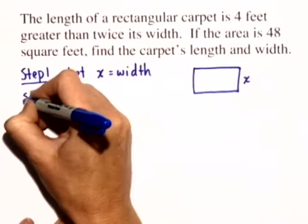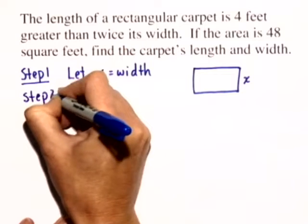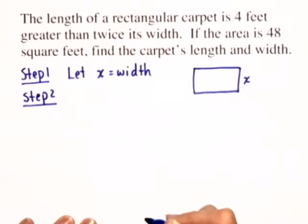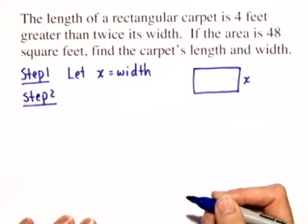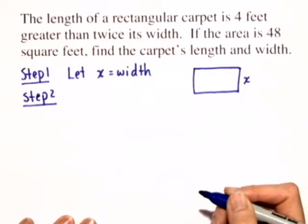Now in step 2, we want to identify any other unknown quantities in terms of x. The other unknown quantity is the length, but we're told that the length is 4 feet greater than twice the width.